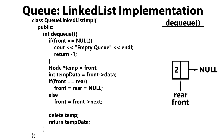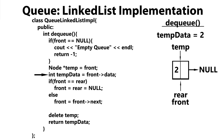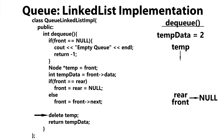If we were to call the dequeue method one more time, first we check to see if our queue is empty — it's not. So we move down here and create a temporary pointer to point to whatever front is pointing to. Then we save the data at the current front of our queue. Then we check: is front pointing to what rear is pointing to? Yes it is. So we set both front and rear to null. Then we delete what temp is pointing to, and finally we return the data.